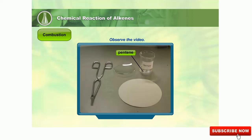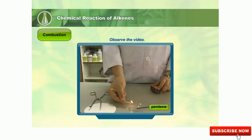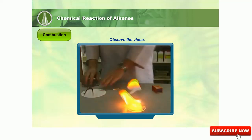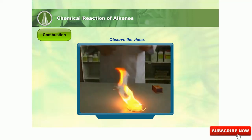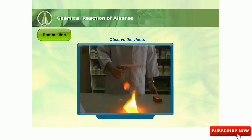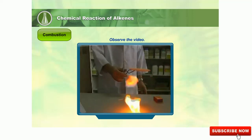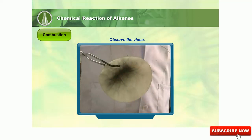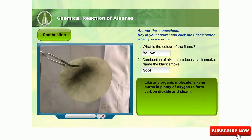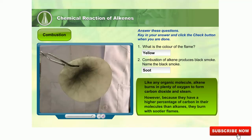Observe what is produced when an alkene is burnt. Like any organic molecule, alkene burns in plenty of oxygen to form carbon dioxide and steam. However, because they have a higher percentage of carbon in their molecules than alkanes, they burn with sootier flames.